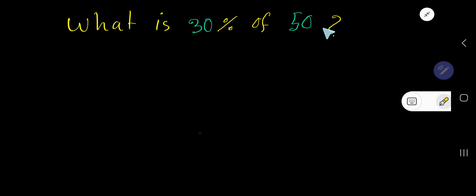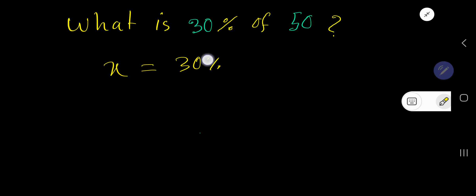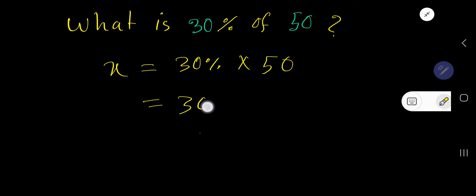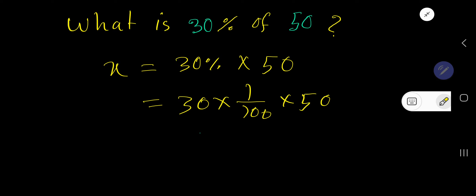What is 30 percent of 50? X equals 30 percent of 50. 'Of' means multiplication, so 30 times percent, which means 1 over 100, times 50. Cancel the zero.